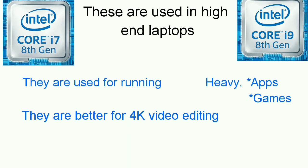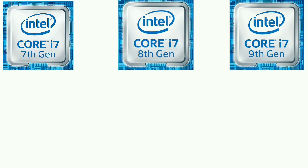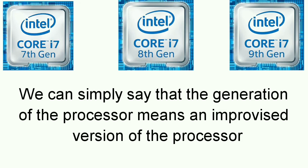If you want to select a processor like i7, you might have confusion about the generation. That confusion is now solved — you can simply say it is an improved version. For example, i7 7th generation versus i7 9th generation.